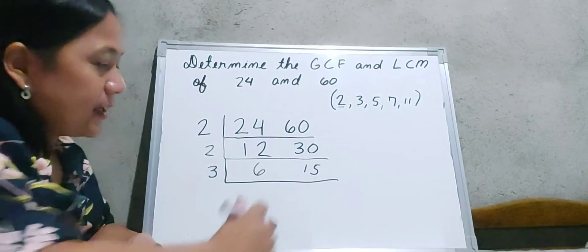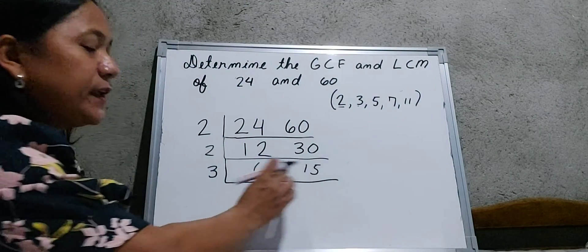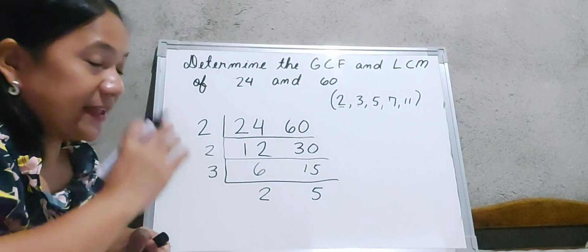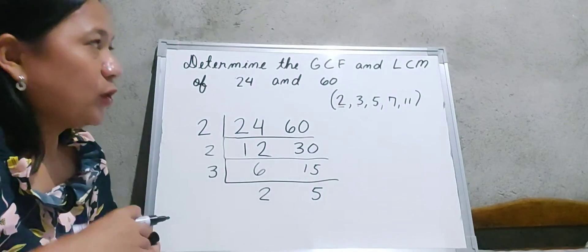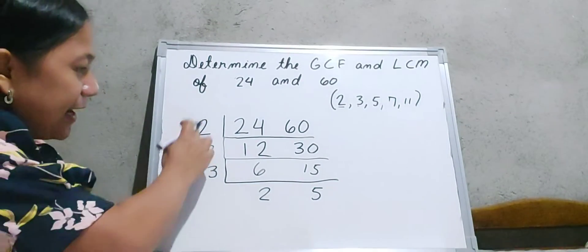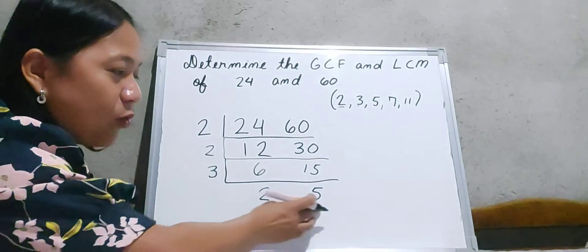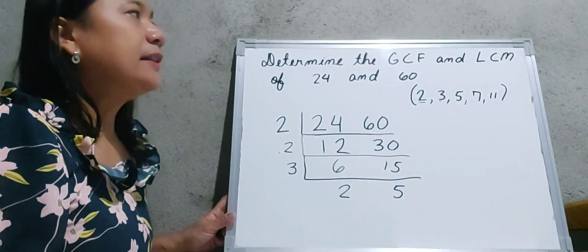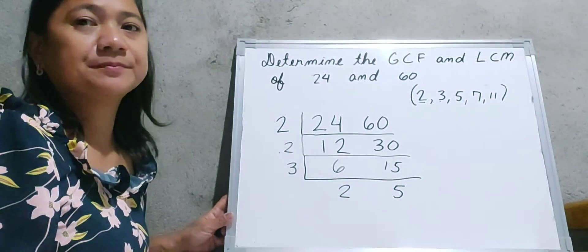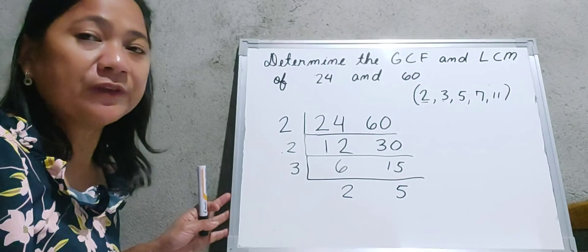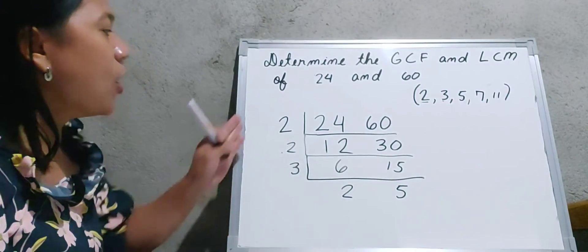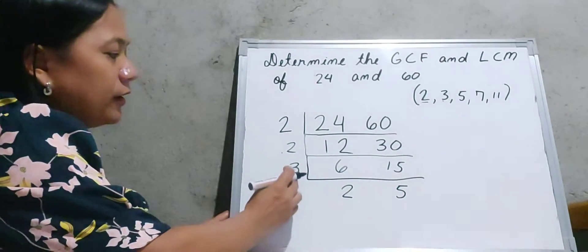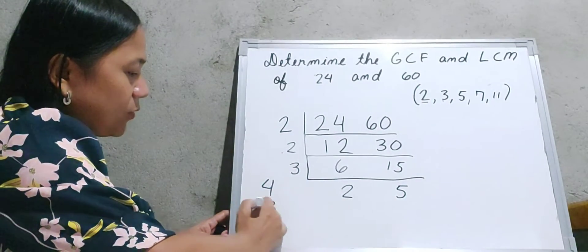6 divided by 3 is equal to 2 and 15 divided by 3 is equal to 5. That is where we stop the continuous division method, because all of our quotients are now prime numbers. To determine the GCF of 24 and 60, we multiply all the numbers on the left side: 2 times 2 equals 4, and 4 times 3 equals 12.